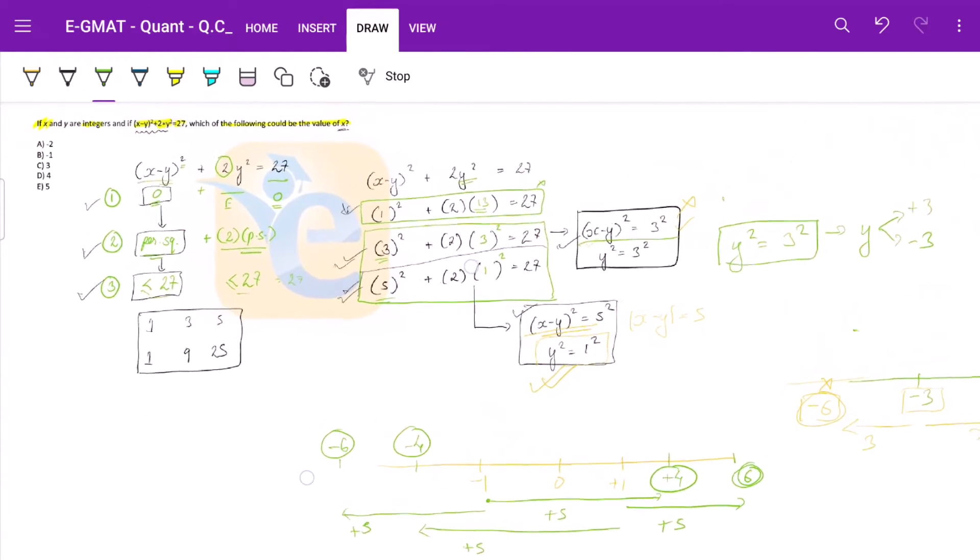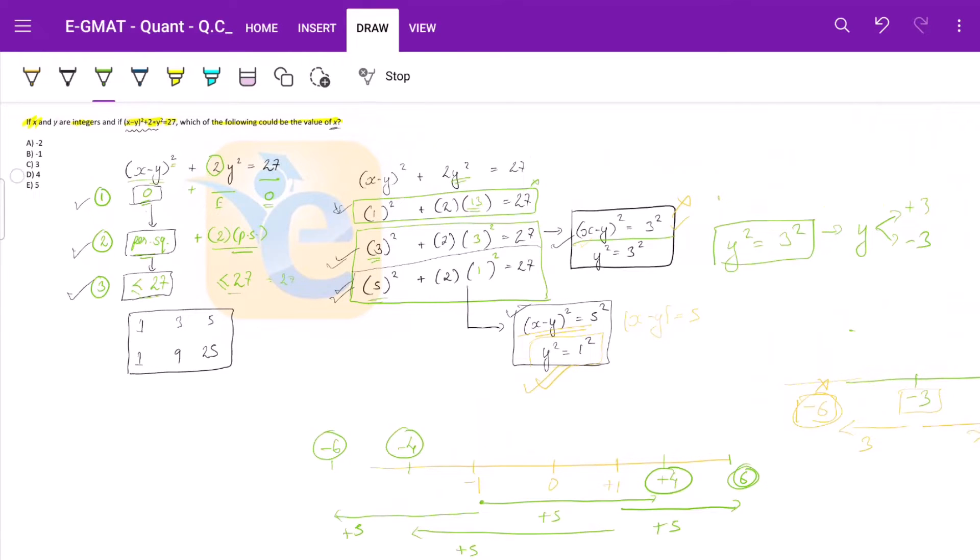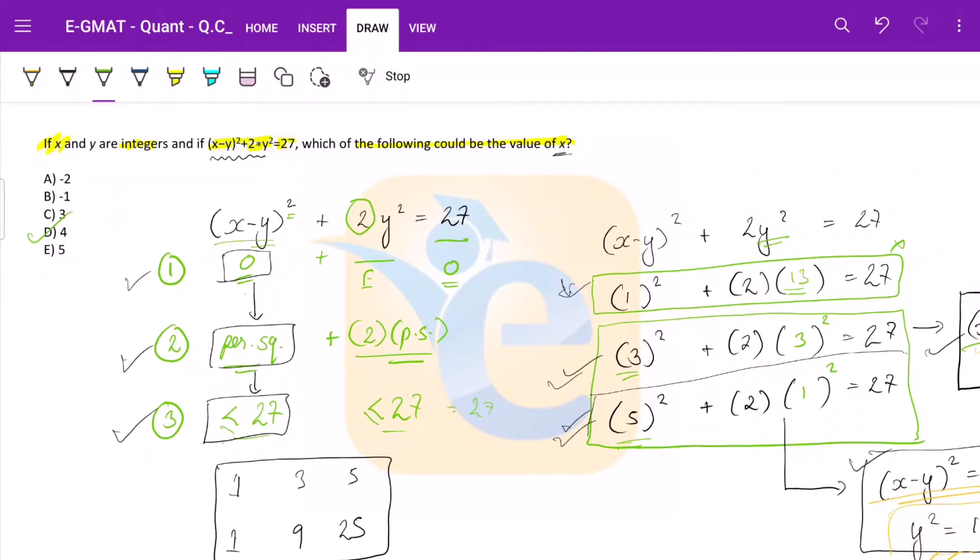Let us see our options. Do we have anything on those lines? We have plus 4 here. So plus 4 would be our answer. That is how you solve such questions.